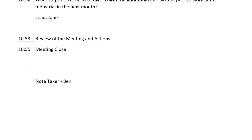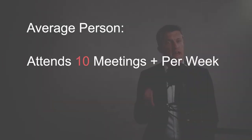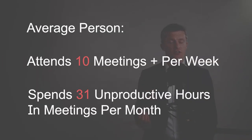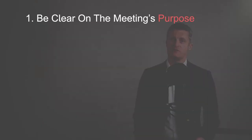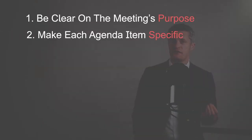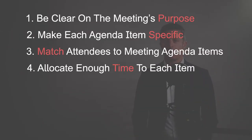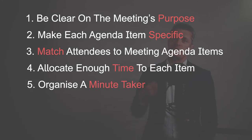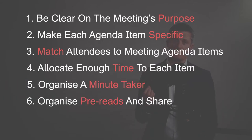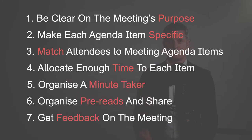We've all been in meetings that wasted our time and didn't seem to achieve anything. The average person attends 10 meetings or more per week and spends 31 hours in unproductive meetings per month. Save time for you and your team by taking these 7 actions when writing any meeting agenda.